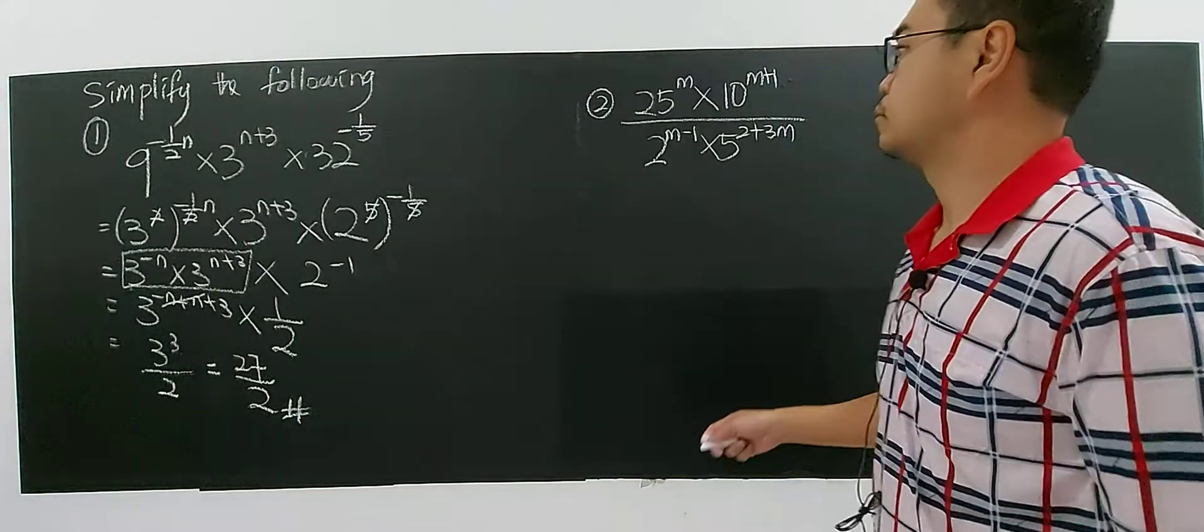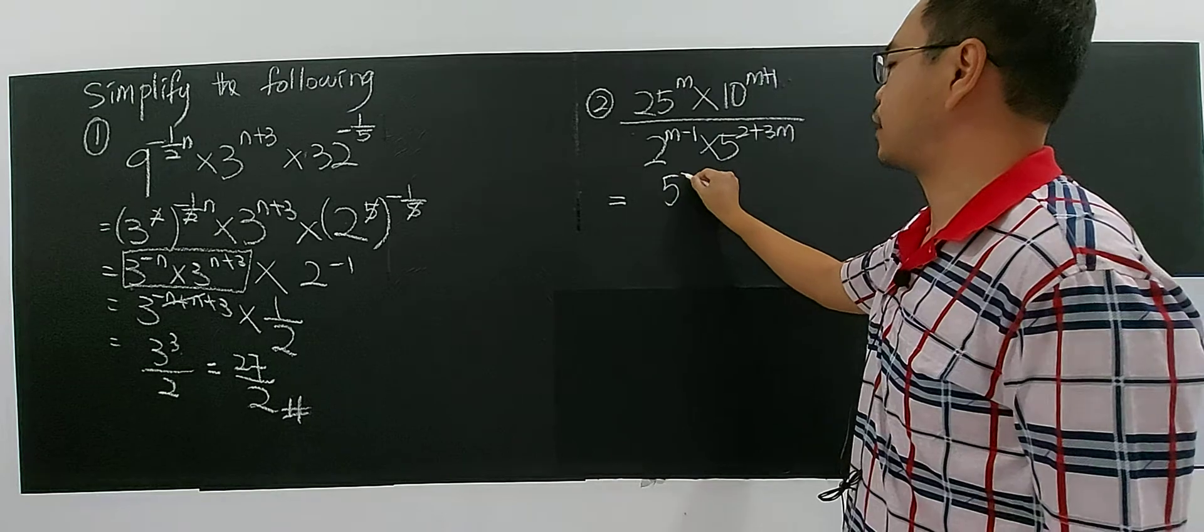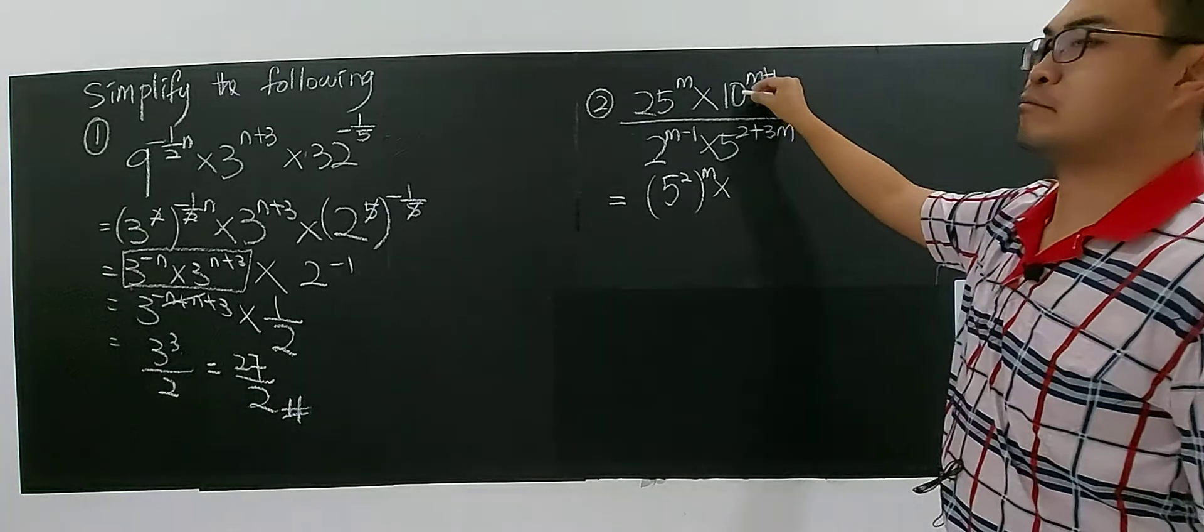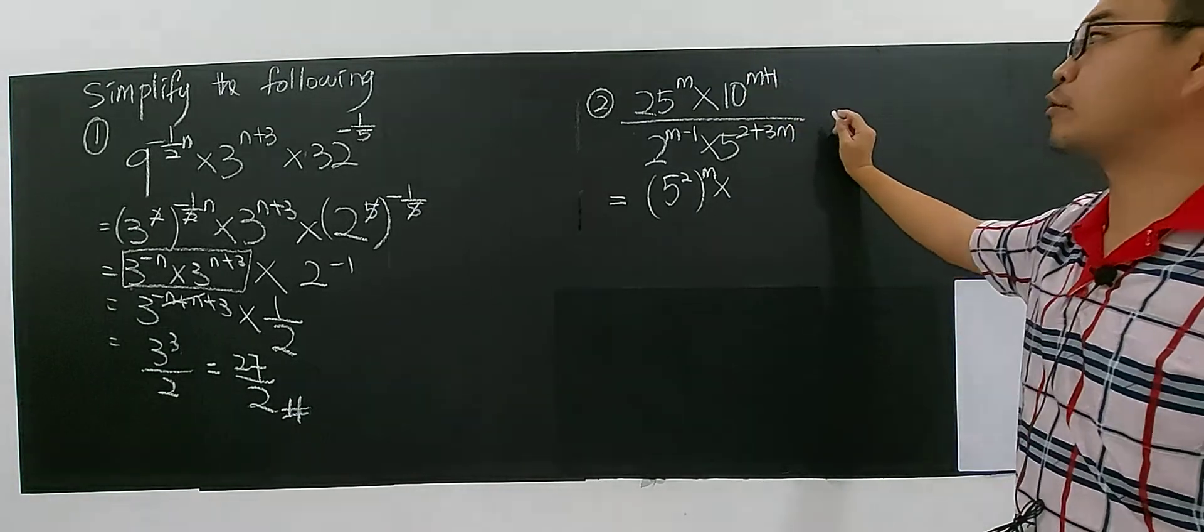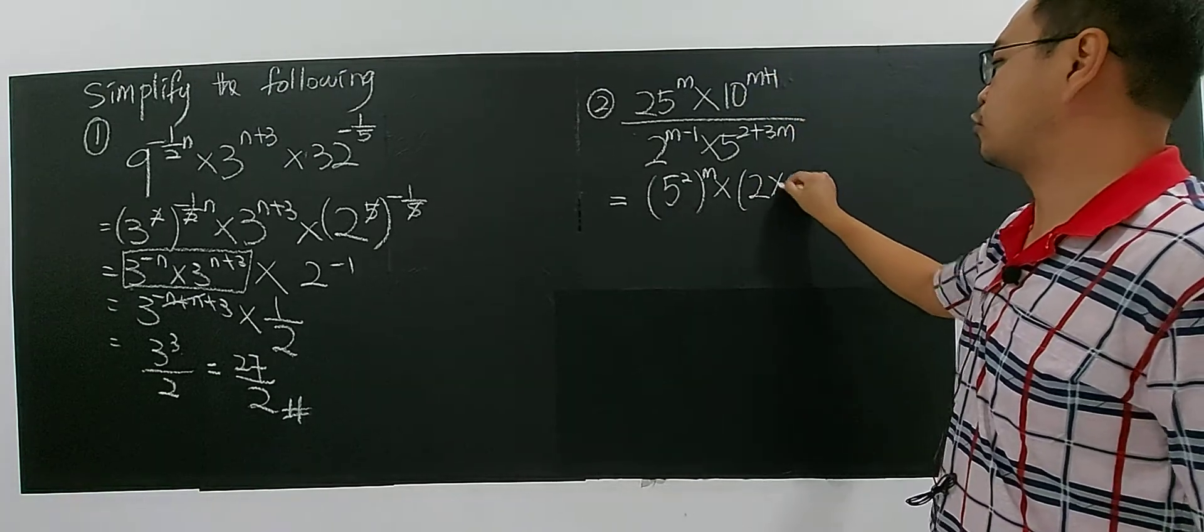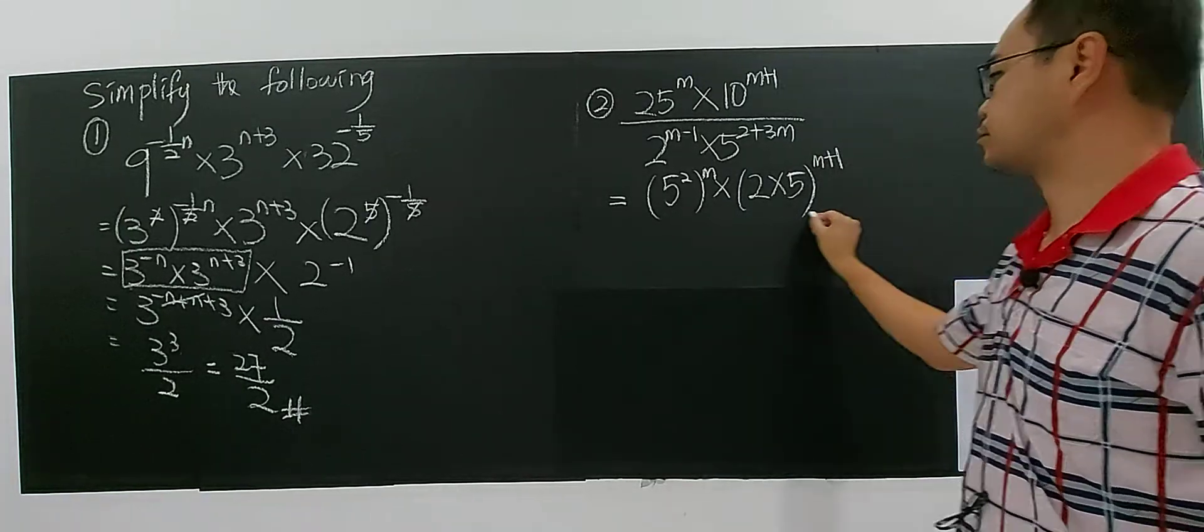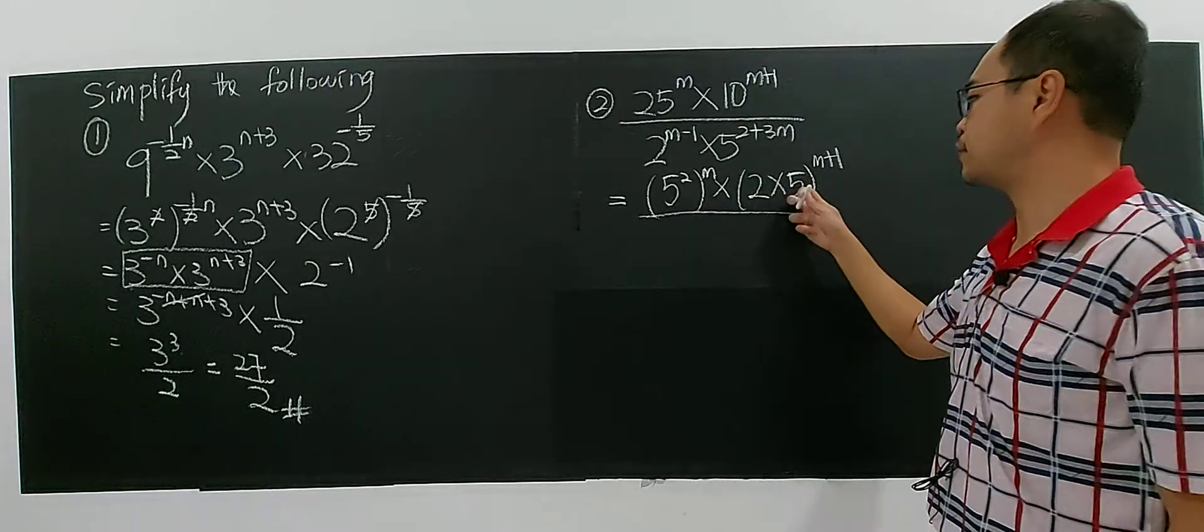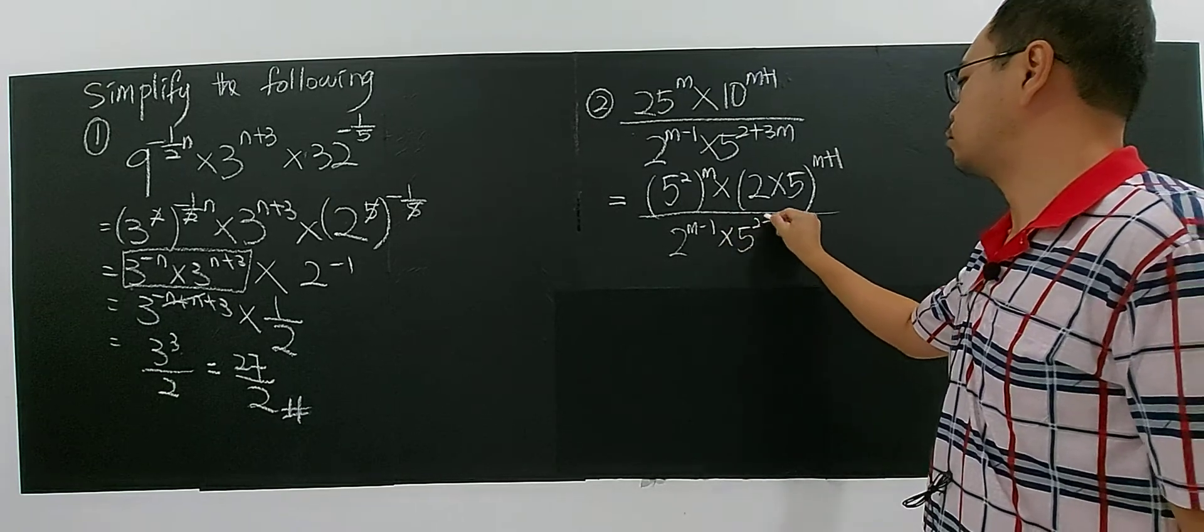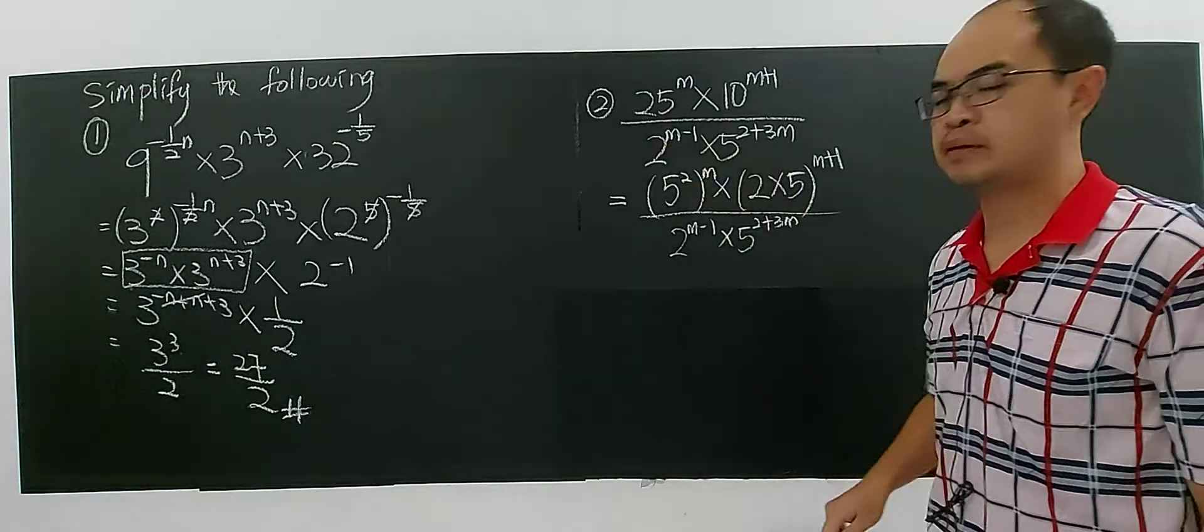So 25, yes, 25 is 5 to the power of 2. So you just write M multiply with 10. 10 you cannot say it's 2 as a base 5. No. You have to prime factorize the 10 into 2 multiply 5 to the power of M plus 1. So that you see they have base 2 and base 5 mixture.